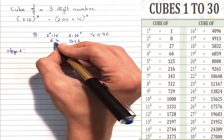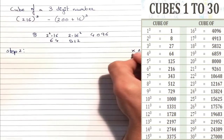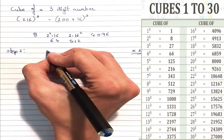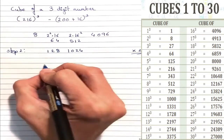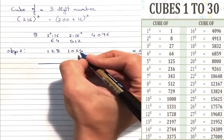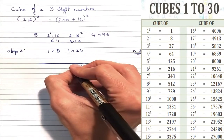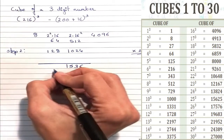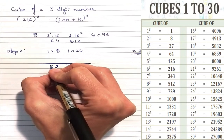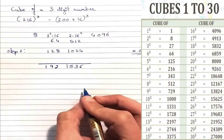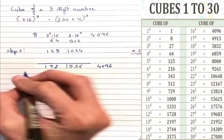Now in step 2, we multiply the middle numbers by 2. So 64 into 2 is 128 and 512 multiplied by 2 is 1024. Now we add these two: 128 + 64 = 192 and 512 + 1024 = 1536. The first and last numbers remain the same.